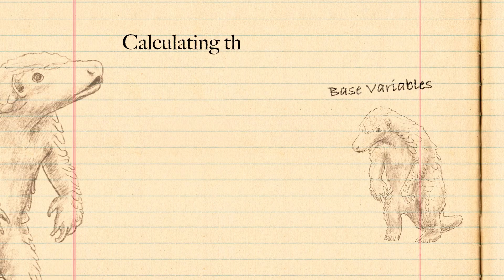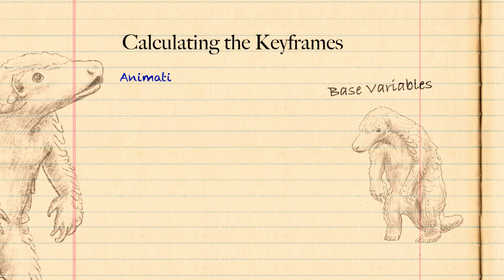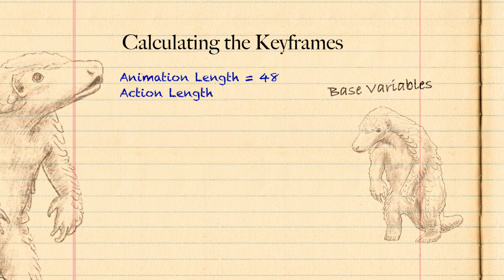Now before we get stuck into animating, we need to know where our key frames are going to be. My total animation length is 48 frames or two seconds, which is a good length of time for a turn in place. I will break this down into an action length of 36 frames for the three steps and a recovery length of 12 frames.